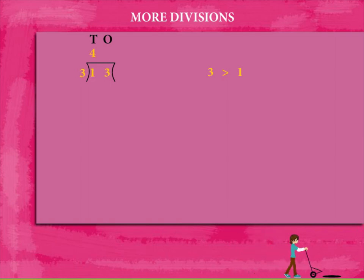So take 13. 3 times 4 is 12. Write 12 below 13 and subtract.